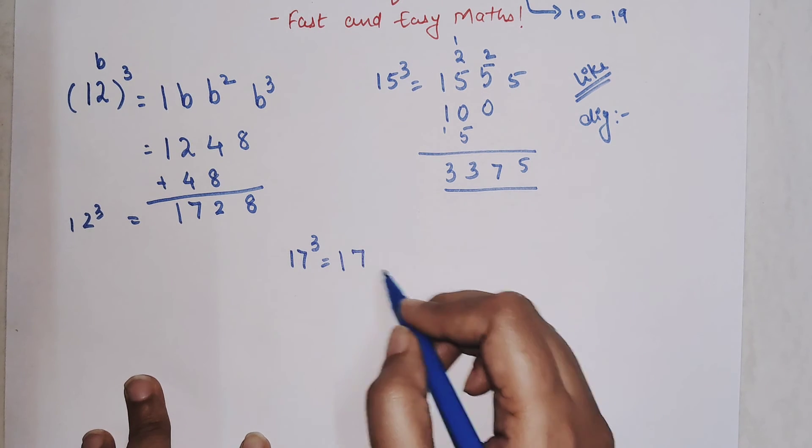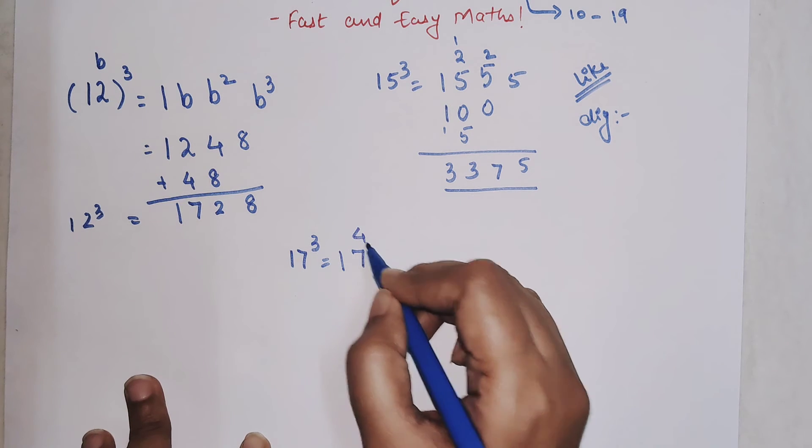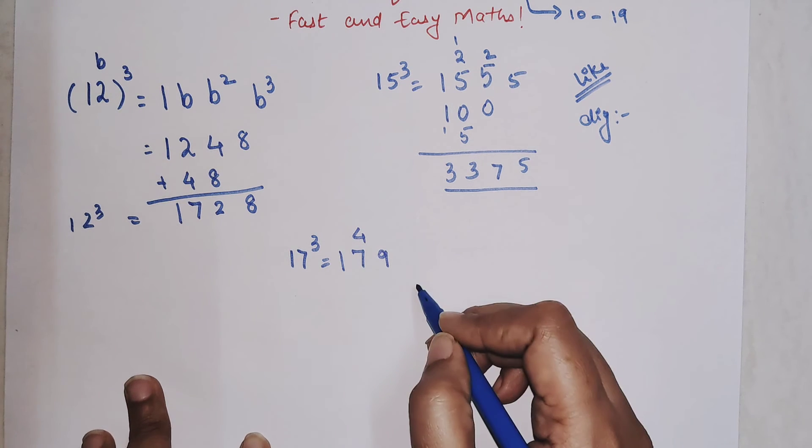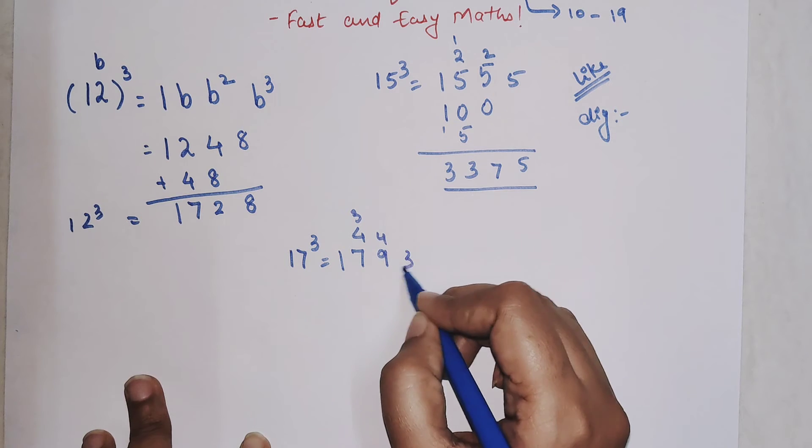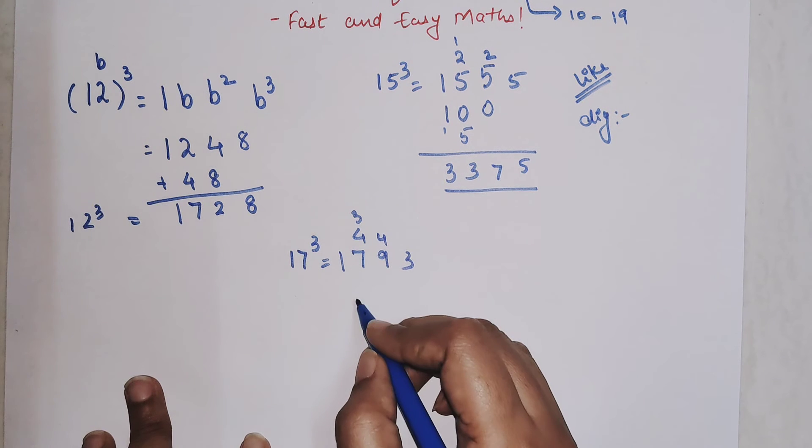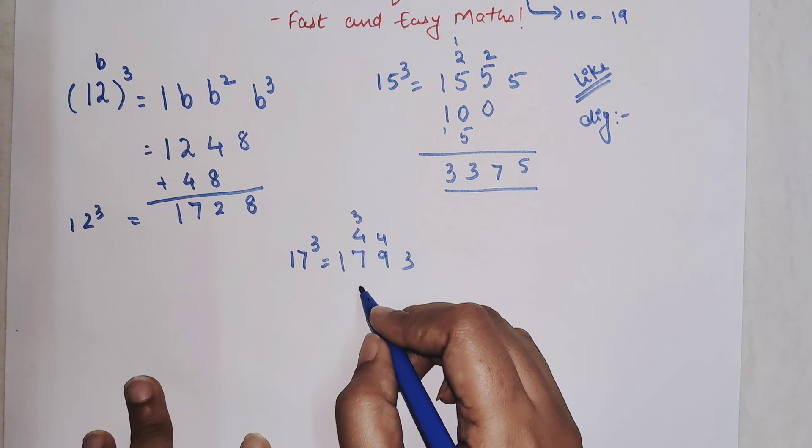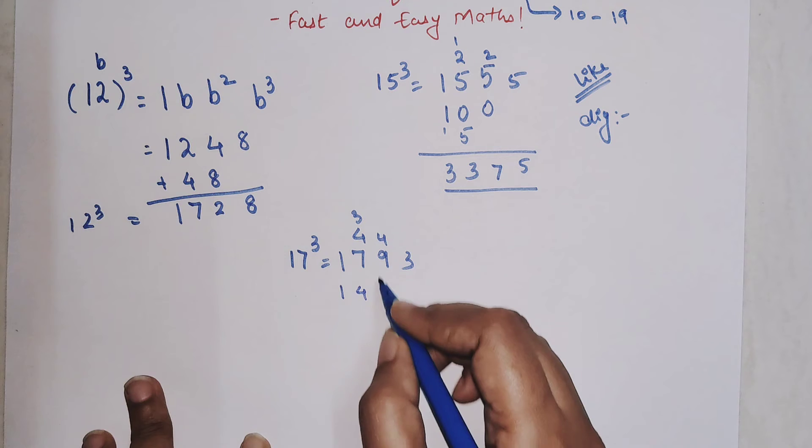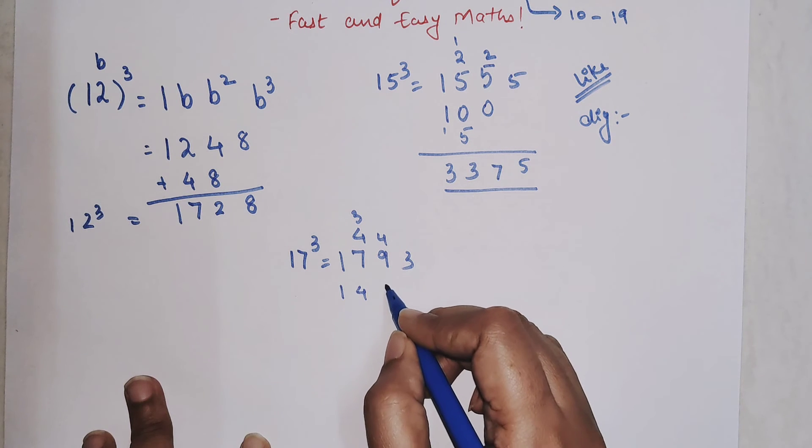So 17 cube, again one will be written as it is, seven will be written over here, seven square is 49, and seven cube is 343. Now next is doubling.